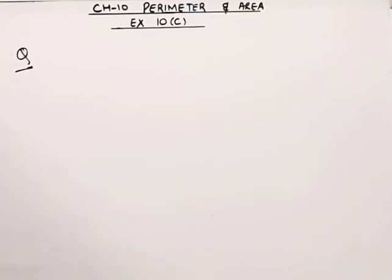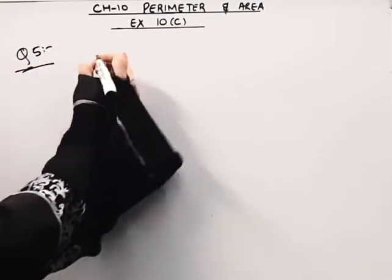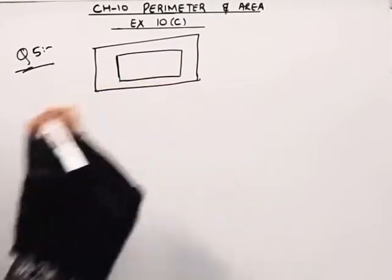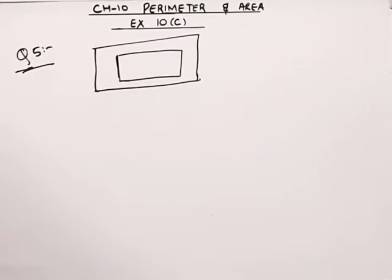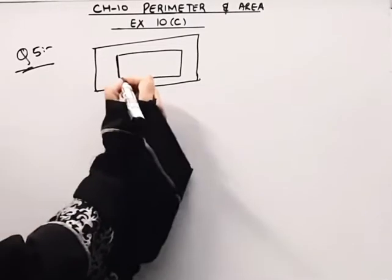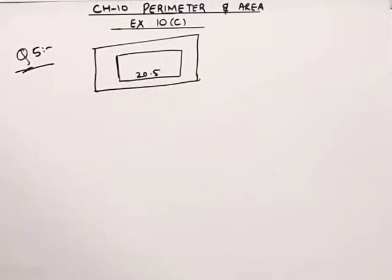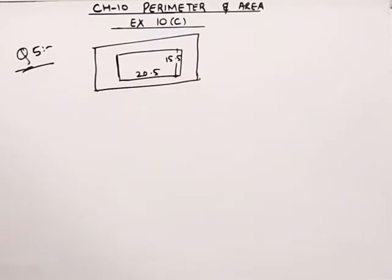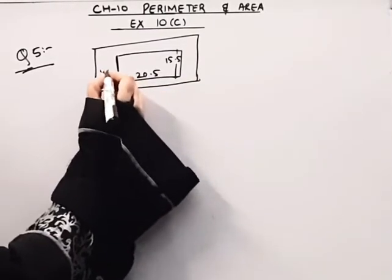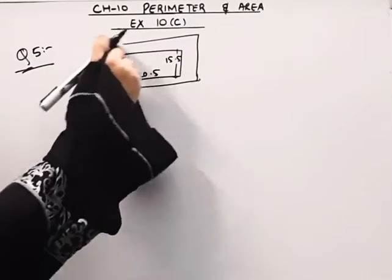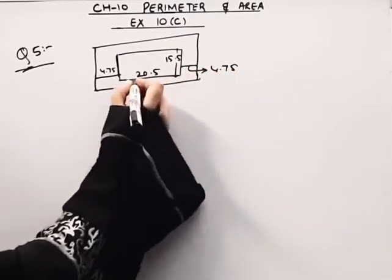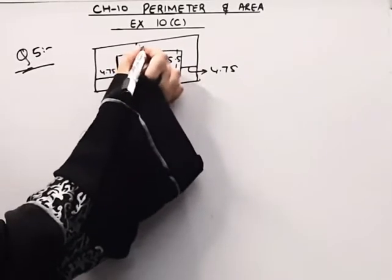Question number 5 is: a veranda of width 4.75 meters is constructed all along outside of a room which is 20.5 meters long and 15.5 meters wide. The veranda is outside the room. Each side has 4.75 meters of veranda — this is 4.75, this is 4.75, this is 4.75, and this is again 4.75.